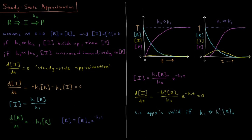The rate law for the reactant, dR/dt, is determined only by its consumption in reaction one: dR/dt equals minus K1 times R. This gives a first-order dependence, so the concentration of R as a function of time is R0 times e to the minus K1T. Substituting into our expression for [I], the concentration of I as a function of time equals K1 times R0 over K2, times e to the minus K1T.